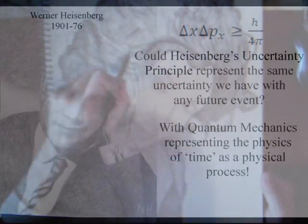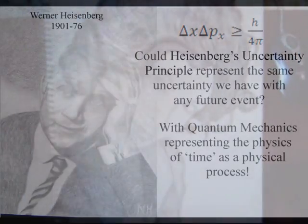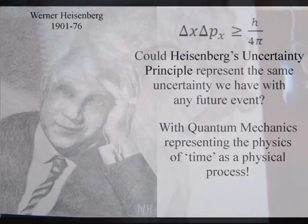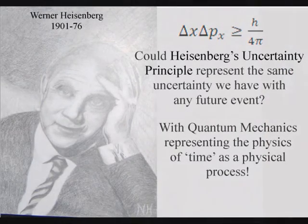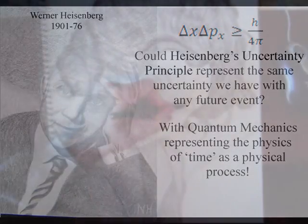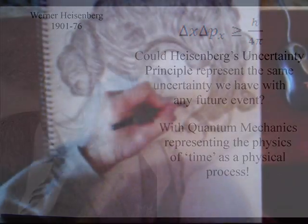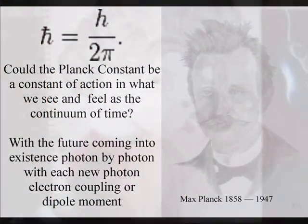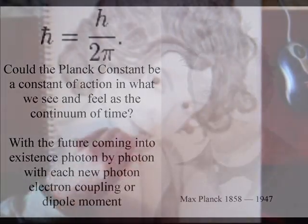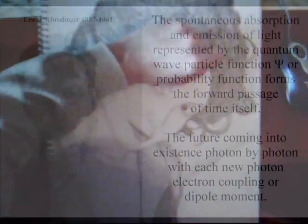At the smallest scale of this process, the mathematics of quantum mechanics represents the physics of time as a physical process, with Heisenberg's uncertainty principle representing the same uncertainty we have with any future event. The Planck constant is a constant of action in the geometrical process that forms a continuum of time and dynamics of space-time.